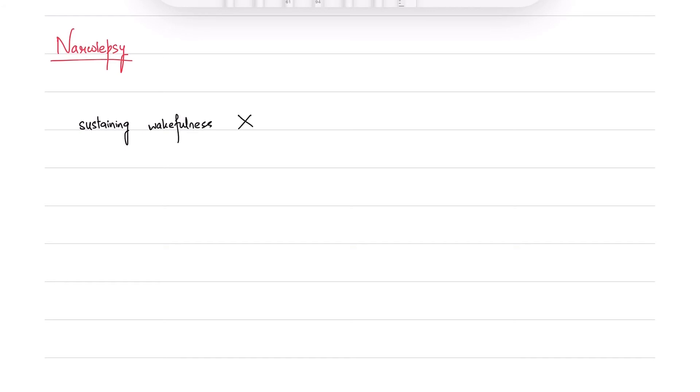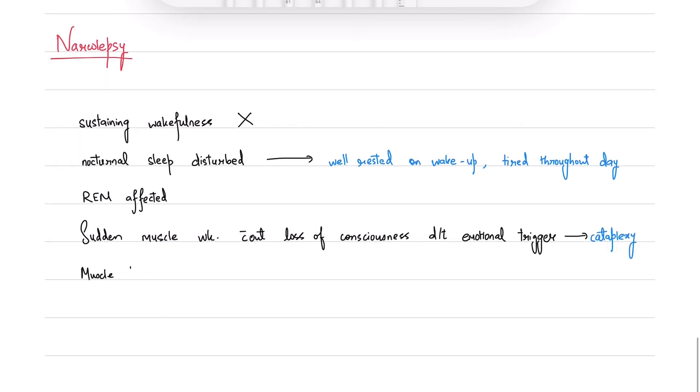We arrive at the last section of today's video: sleep disorders. In narcolepsy, patients have problems sustaining wakefulness throughout the day. All patients have excessive daytime sleepiness. They have disturbed nocturnal sleep but feel well-rested upon awakening, then feel tired throughout the day. As we saw before, REM sleep is affected in narcolepsy. Patients can have sudden muscle weakness without any loss of consciousness, usually when they face a strong emotion. This characteristic is known as cataplexy. Patients can also have dreamlike hallucinations at sleep onset or when they wake up, and they'll have muscle paralysis when they wake up.